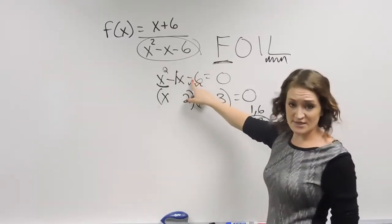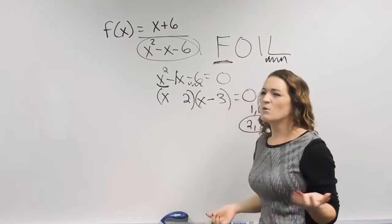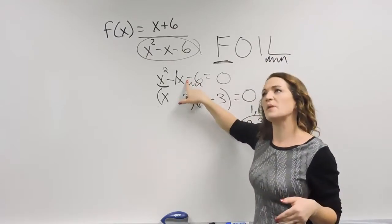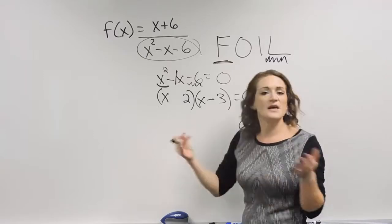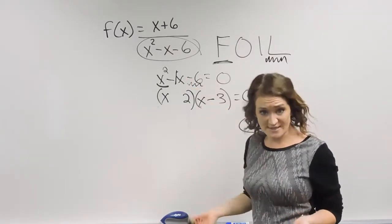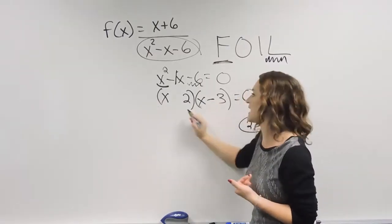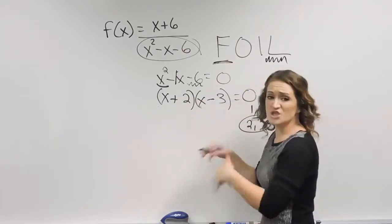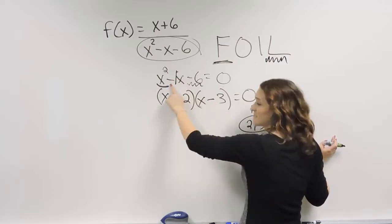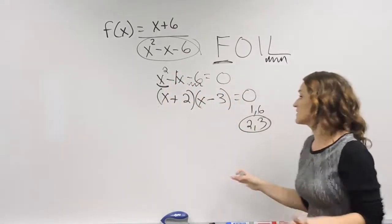Then move to the last term — my last term is negative 6. I need to think: how do I multiply and get a negative 6? Using integer rules: same signs give a positive answer, different signs give a negative answer. Since we have a negative result and the 3 is already negative, that means the 2 has to be positive. Check: positive 2 times negative 3 is negative 6, and 2 minus 3 is negative 1. Make sure they multiply to get the last number and add to get the middle number — everything checks out.